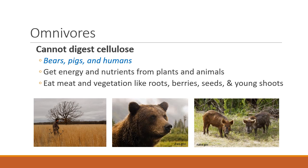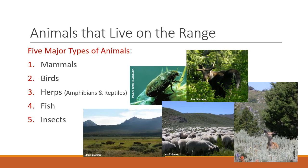Omnivores are those that eat both plants and animals. We belong to that group, along with bears and pigs and a few others. We get our energy mostly from high-quality plants, but also by eating animals. We do not have the ability to digest cellulose. We have a small relationship with some microbes in our gut that might give us some energy from cellulose, but mostly we have to eat really high-quality soluble starches and sugars and other animals.